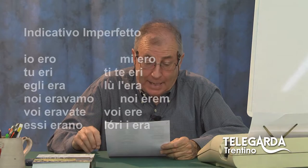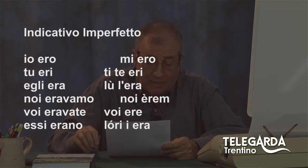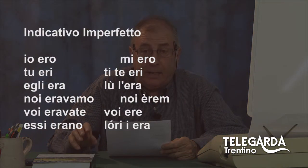A un certo punto si impasta anche la bocca con queste forme quasi di estremo oriente. E ho detto che questo passato prossimo vale anche per il passato remoto e il trapassato remoto. Andiamo adesso, sempre con l'indicativo, all'imperfetto. Io ero, tu eri, egli era, noi eravamo, voi eravate, essi erano.